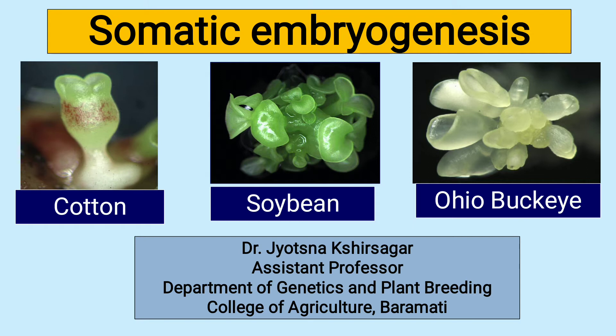In the last lecture, we discussed the micropropagation of plants. In the first slides, we are seeing examples of embryos of different crops. The first one is cotton, the second one is soybean, and the third one is Ohio banchi.